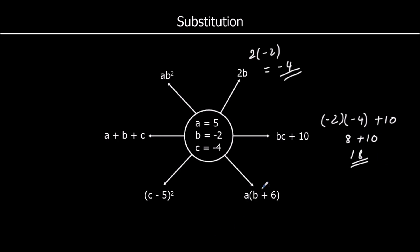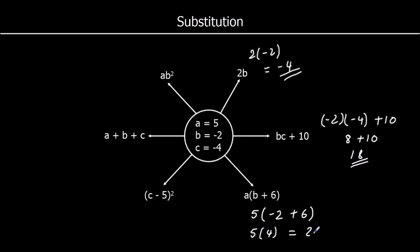a times (b plus 6). So it's 5 times (negative 2 plus 6). We do the bracket first: negative 2 plus 6 is 4. So it's 5 times 4, which is 20.